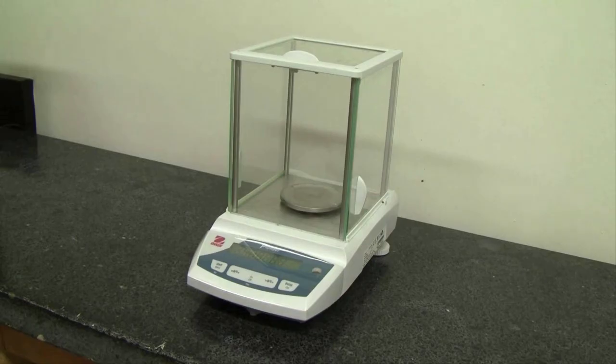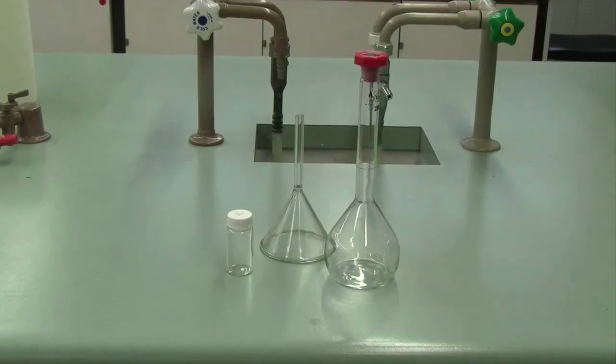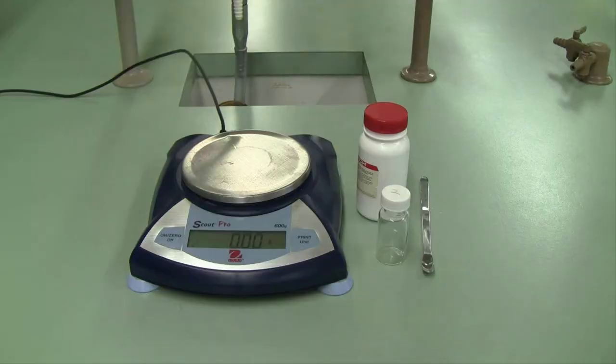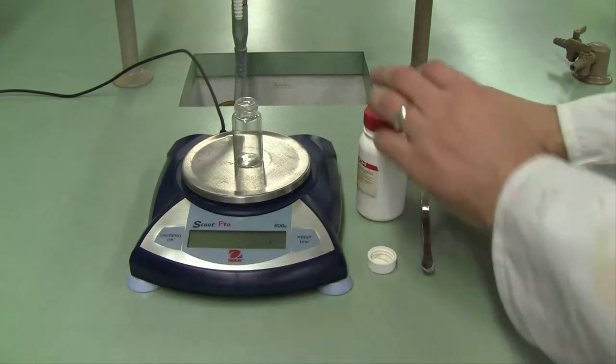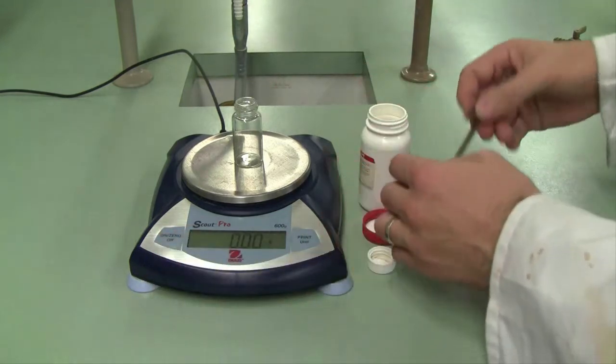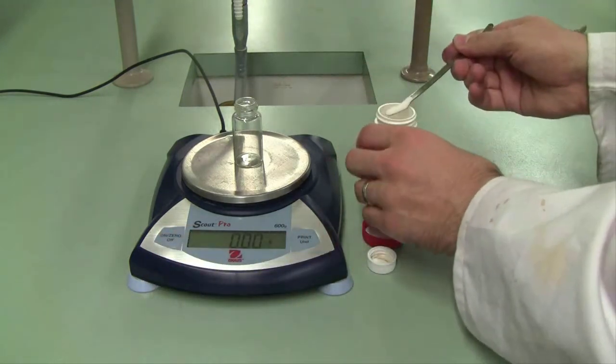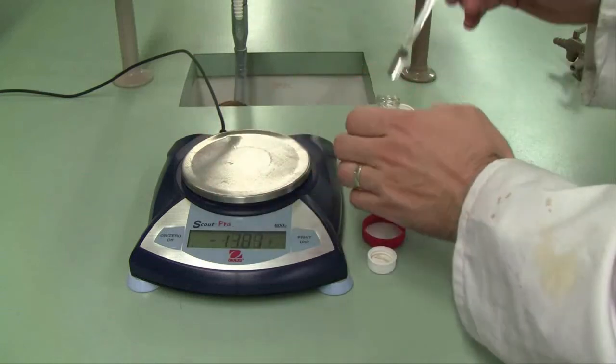And we're going to pick up a new technique. We're going to learn to weigh by difference using analytical balances, standard flask, and glass neck funnels. Starting our experiment, we will take our unknown acid, pop a clean dry weighing vial on the balance, and we'll weigh in about 0.9 to 1 gram of our solid acid.